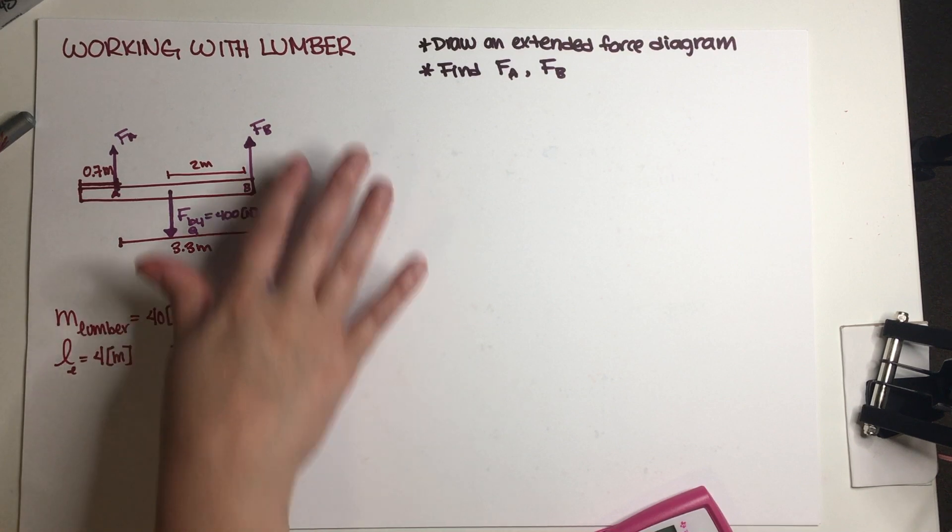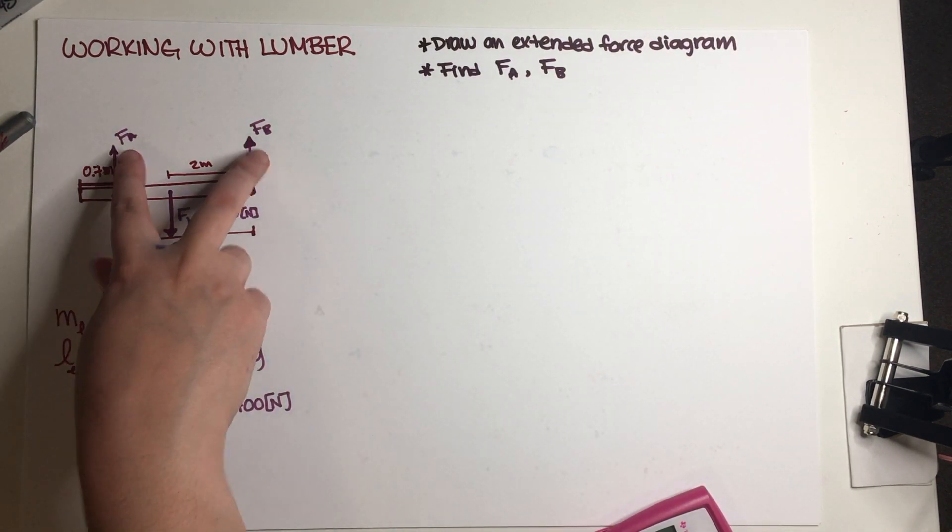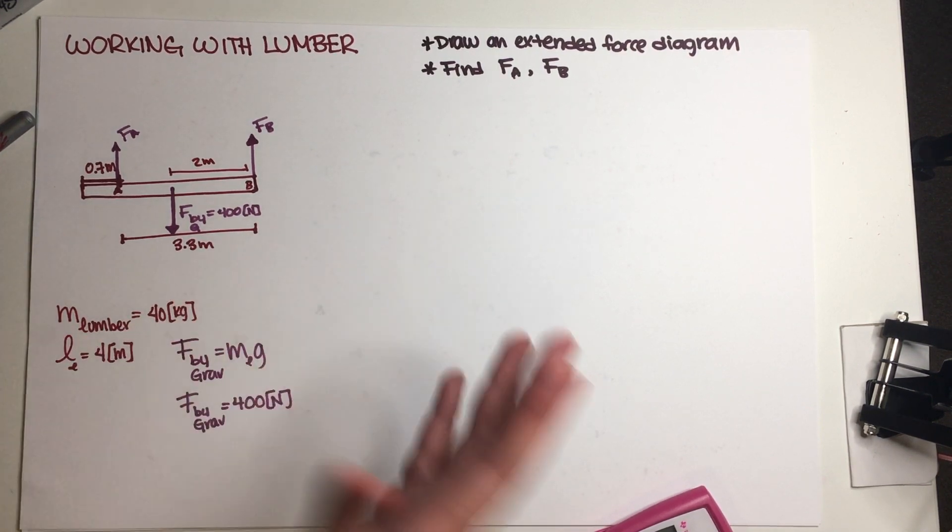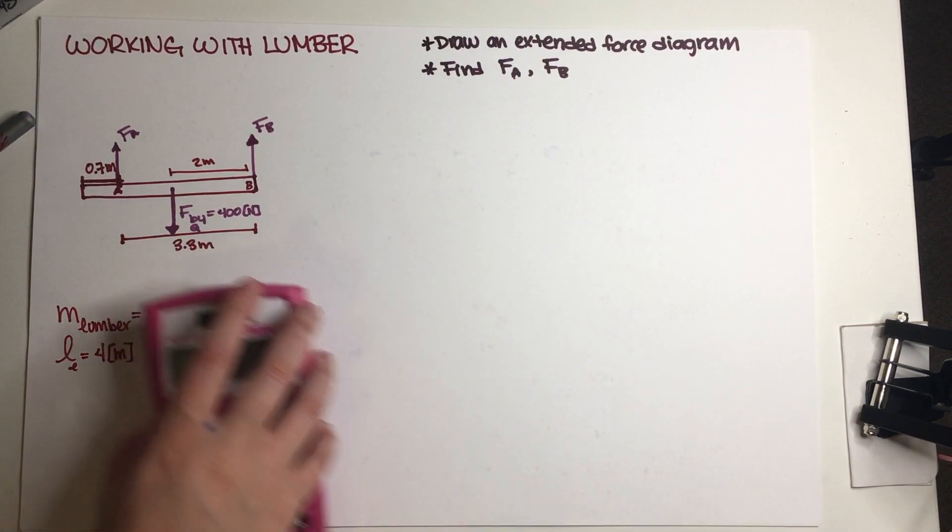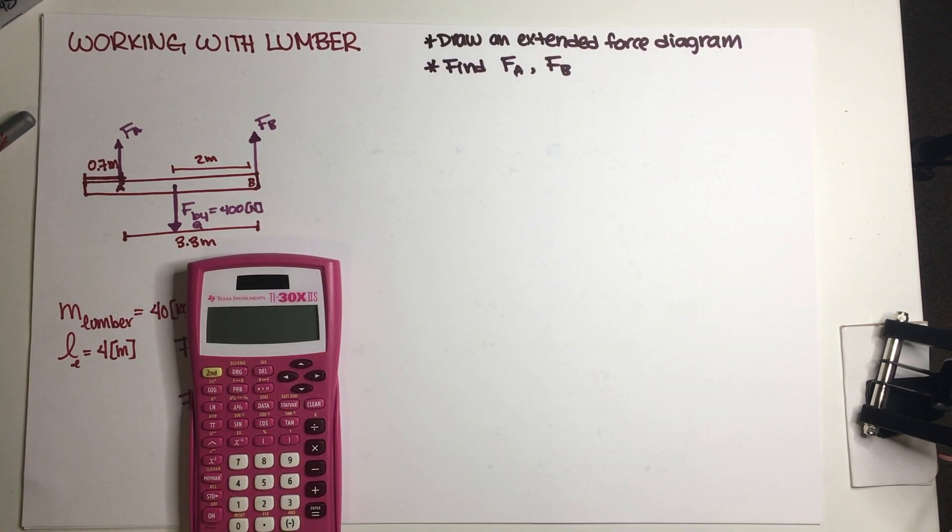So this is already an extended force diagram. We just need to figure out the magnitudes over here in order to be able to scale the vectors. So how are we going to figure out two of the forces?